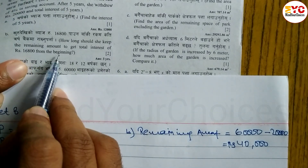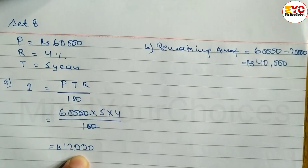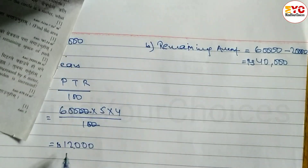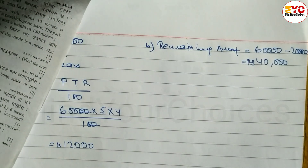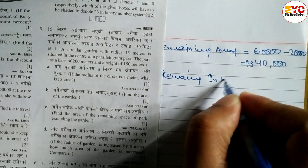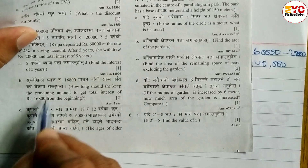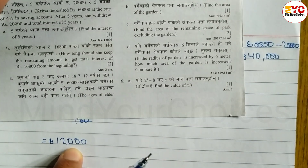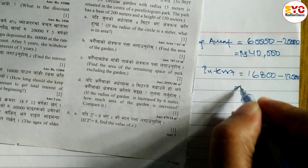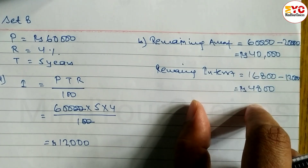The total interest from the beginning is Rs. 16,800. She already earned Rs. 12,000 interest in the first 5 years, so the remaining interest needed is 16,800 minus 12,000, which equals Rs. 4,800.